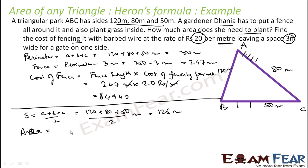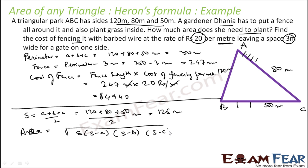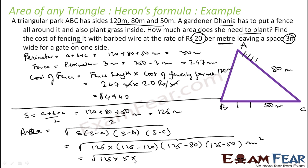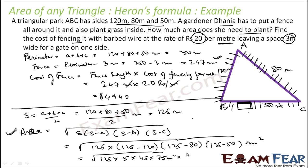Area is nothing but root of S(S − A)(S − B)(S − C). Putting the values: root of 125 × (125 − 120) × (125 − 80) × (125 − 50) meter square. This becomes root of 125 × 5 × 45 × 75. Solving this, the answer comes out to be 375√15 meter square.